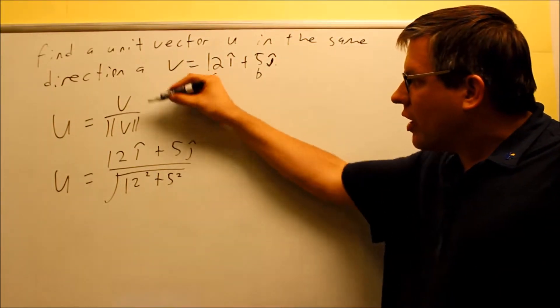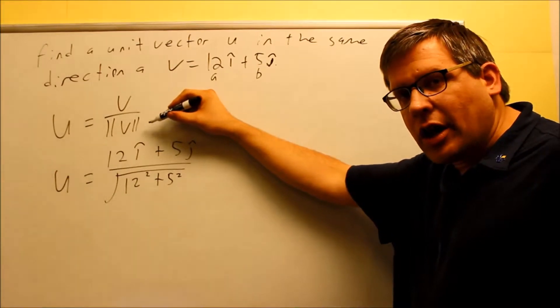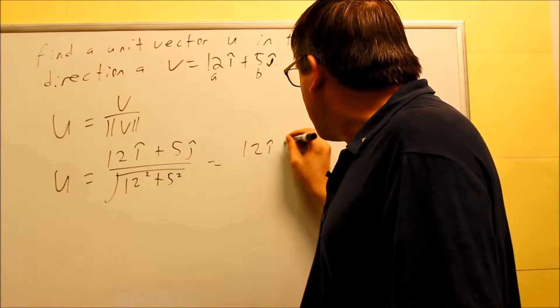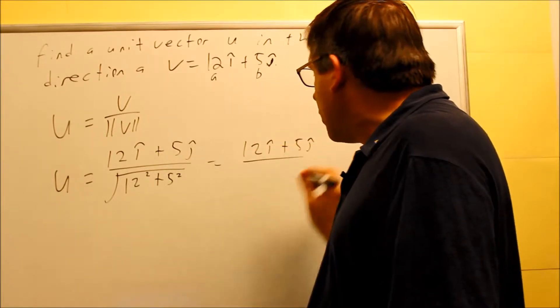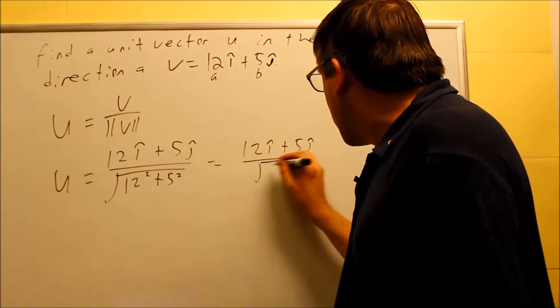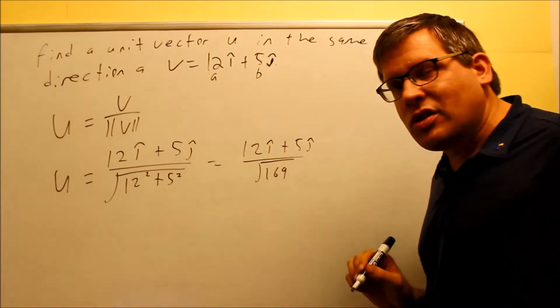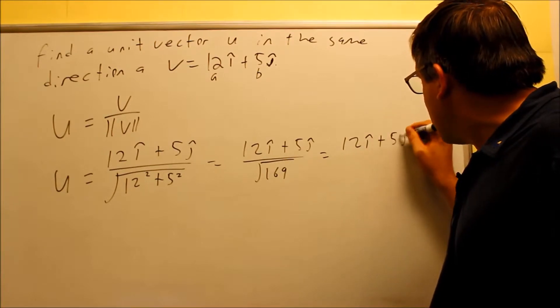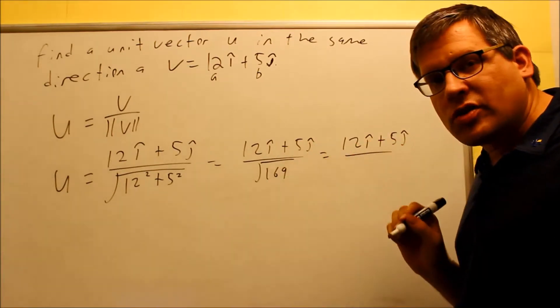I plugged in for the V and I also plugged the formula in for the magnitude and now I want to simplify this. Okay, so I get 12I plus 5J. Let's do the bottom one. That's going to be 144 plus 25. That's the square root of 169. And that's going to be 12I plus 5J over the square root of 169. That's 13.